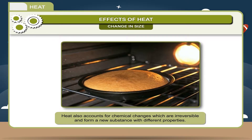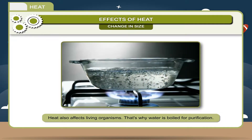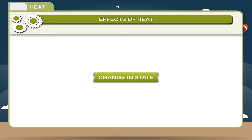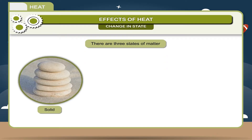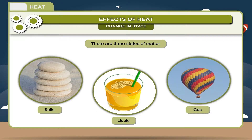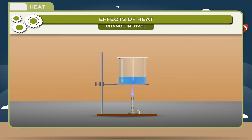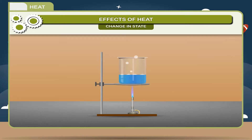Example: baking of a cake. Heat also affects living organisms, that's why water is boiled for purification. Change in state: there are three states of matter — solid, liquid, and gas. When a body is heated there occurs a change in its state. On heating, a solid changes from solid to liquid.